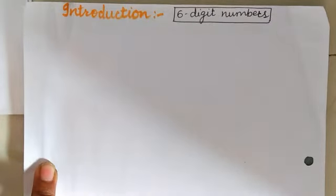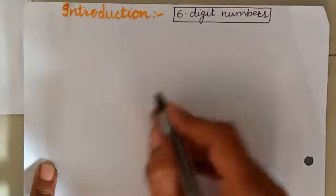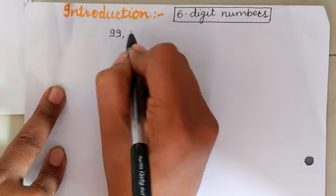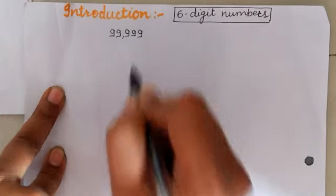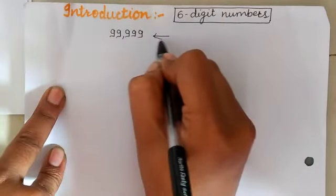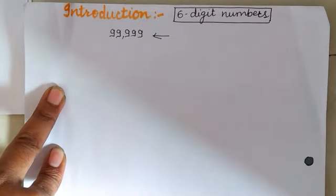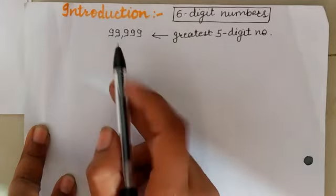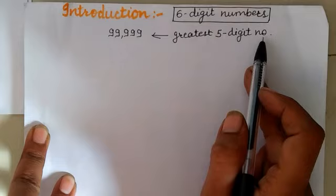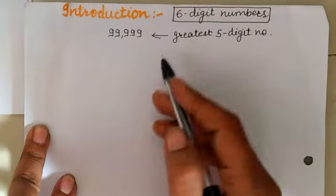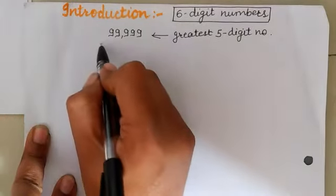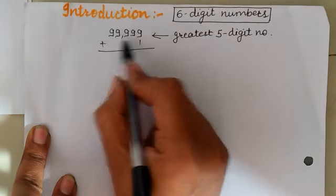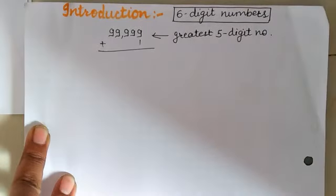Students, in our previous standard we have learnt about 5-digit numbers. Suppose here I am writing one of the 5-digit numbers: 99999. This is one of the biggest or the greatest 5-digit numbers. So if we add 1 to this greatest 5-digit number, then we will get something different which is related to our topic. Let's see the calculation.